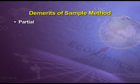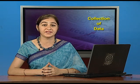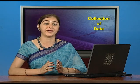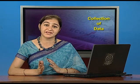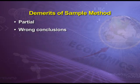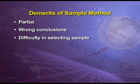Now, the demerits of sample method. The first demerit is that results can be partial, because the success of sample method is basically dependent upon selection of an appropriate sample — if sample selection is not proper, results can be partial. The second demerit is wrong conclusions: if the sample is not representative of the entire population, our conclusions would be wrong. The third demerit is difficulty in selecting a sample, as it is not an easy task and we face different kinds of difficulties.